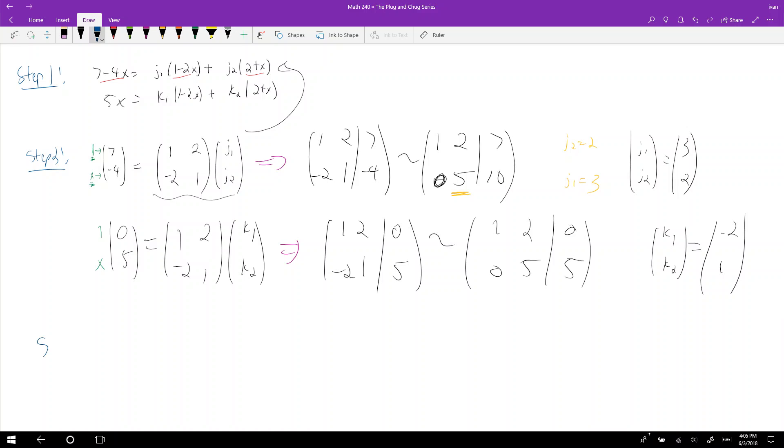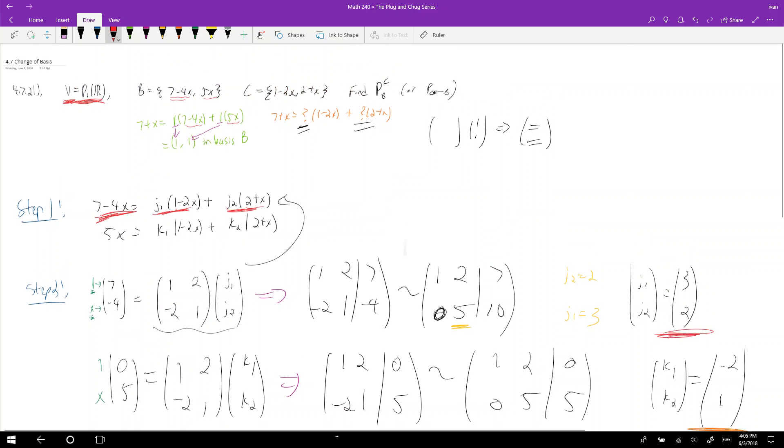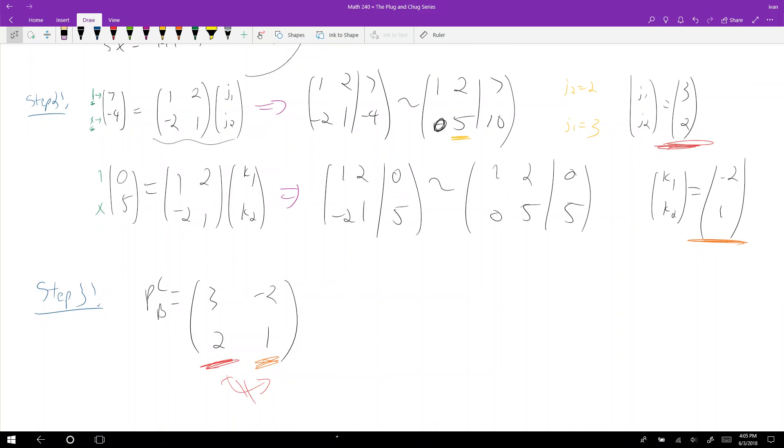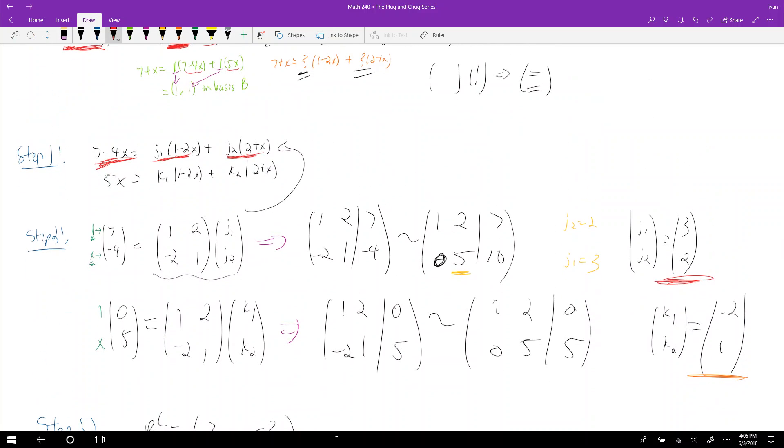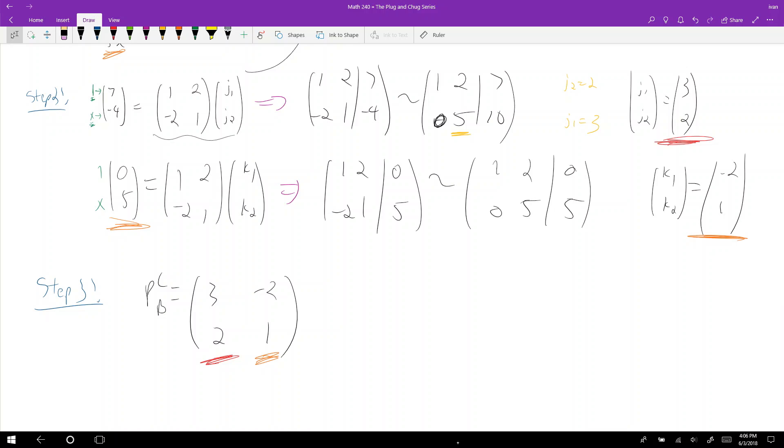Well, now is step 3, which means I find what my change of basis matrix is. And p b c is just equal to 3, 2, which comes from this guy. And then negative 2, 1, which comes from this guy. And the reason why I have to put j1, j2 in is because j1, j2 goes with 7 minus 4x, and 7 minus 4x is the first basis element. It's listed in b as the first guy. So the order actually is really important. If I switch these guys, that's wrong. Don't switch the order. So then negative 2, 1 corresponds to 0, 5. And since 0, 5, or 5x, and since 5x comes second, then negative 2, 1 has to come second. So this is p b c.